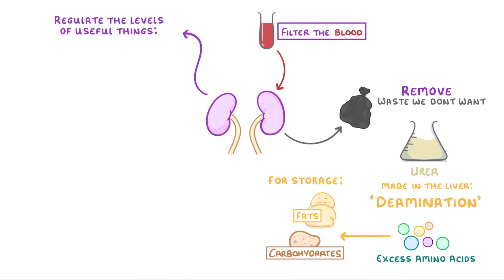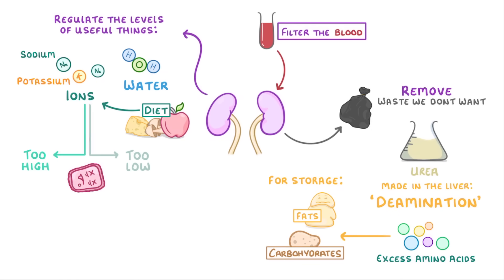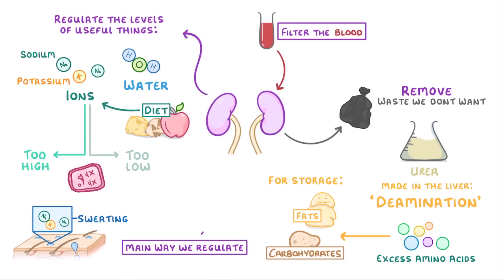The kidneys' other job is to regulate the levels of useful things, like ions and water, which we need to keep at the right levels. We get ions, like sodium and potassium ions, from our diet, and we need them for all sorts of things in the body. However, if the levels get too high or too low, it can start to damage our cells and cause problems, so we have to keep them just perfect. We lose some ions naturally during sweating, which is why sweat tastes a bit salty, but the main way we regulate our ions is through our kidneys.